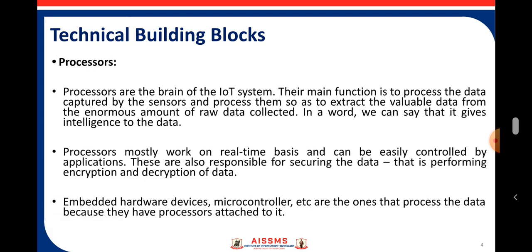The next building block is the processor. Processors are the brain of the IoT, you can say. Processors are primary real-time devices that can be readily manipulated by software. They are also in charge of data security, which includes data encryption and decryption. The main function is to process the data captured by the sensors — extracting valuable data from the huge amount of raw data collected, providing intelligence to the data collected by the sensors.